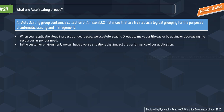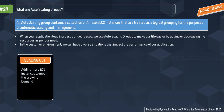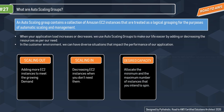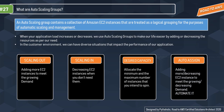With auto scaling groups remember these four things. First, scaling out: adding more EC2 instances to meet growing demand. Second, scaling in: decreasing EC2 instances when you don't need them. Third, desired capacity: allocating the minimum and maximum number of instances you intend to run. Fourth, auto-assign: adding or decreasing EC2 instances automatically based on the current load.